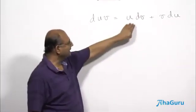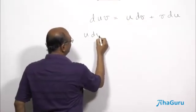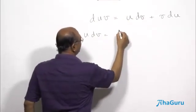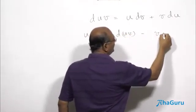Now if I keep this as it is, I can bring that to this side. So I can write it like this: I can write UDV is d(UV) minus VDU.